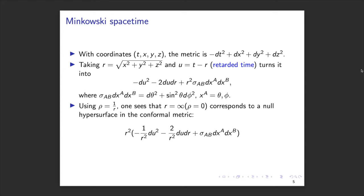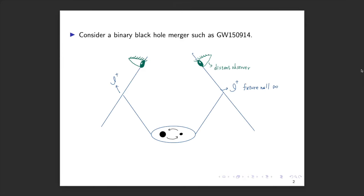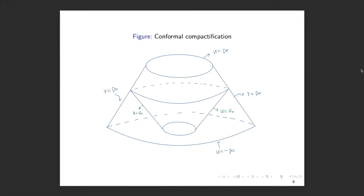You can rewrite the Minkowski metric in this form, which is up to a conformal factor R². At R = ∞, this becomes a degenerate metric — instead of three-dimensional, it is effectively two-dimensional. This is the Penrose conformal compactification. With this, we can bring the future null infinity — which corresponds to the end of null geodesics — to a finite part of the diagram.